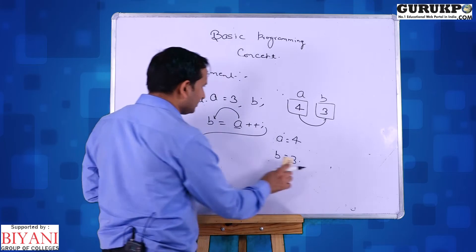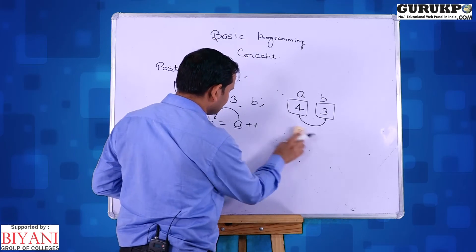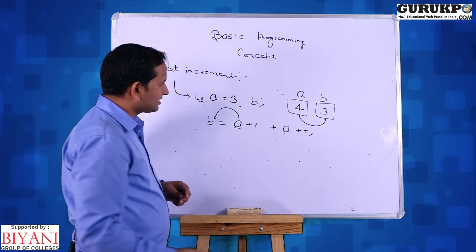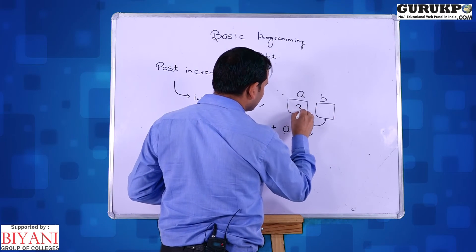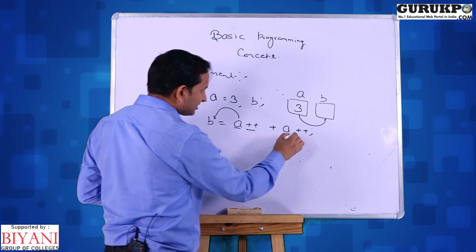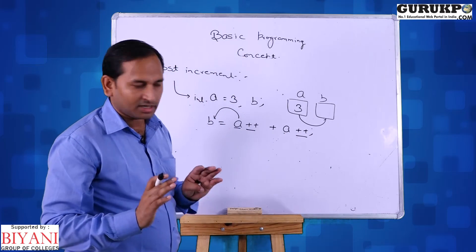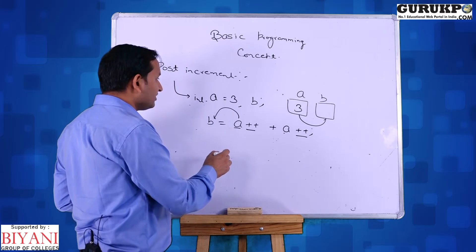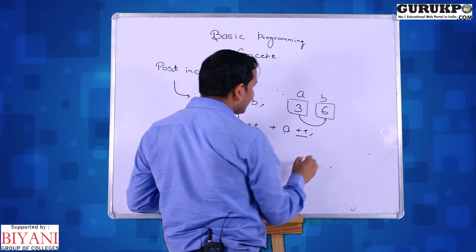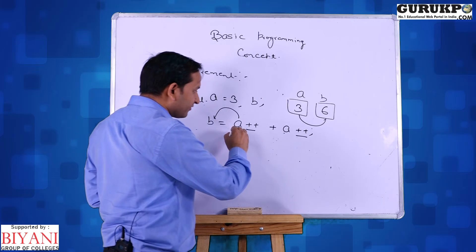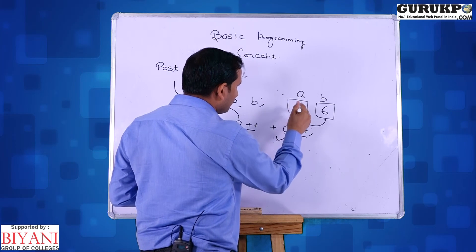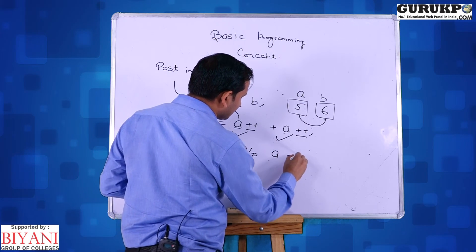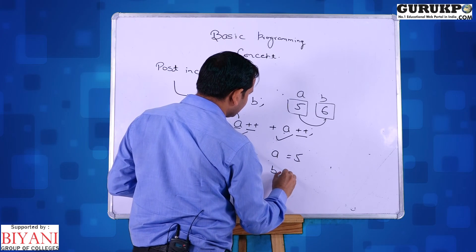Another post-increment example: A++ * A++ — both are post-increment, so no increment occurs during the statement. First it computes A + A = 3 + 3 = 6, and 6 is stored inside B. When control passes to the next line, A is incremented once and then again, so value of A becomes 5. Output: A is 5 and B is 6.